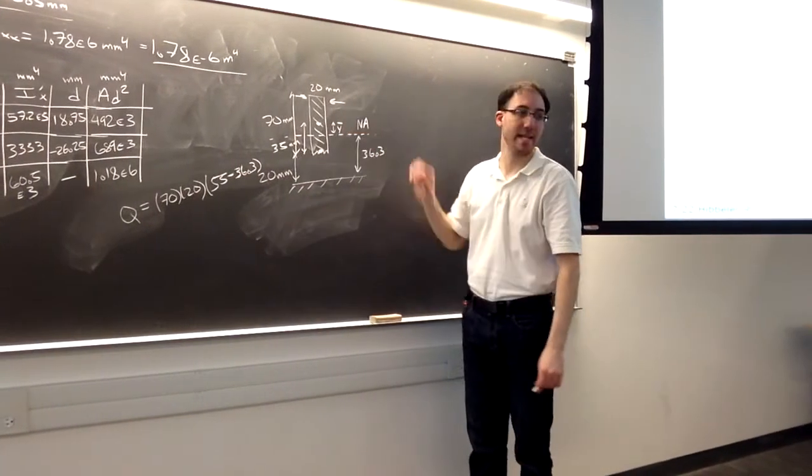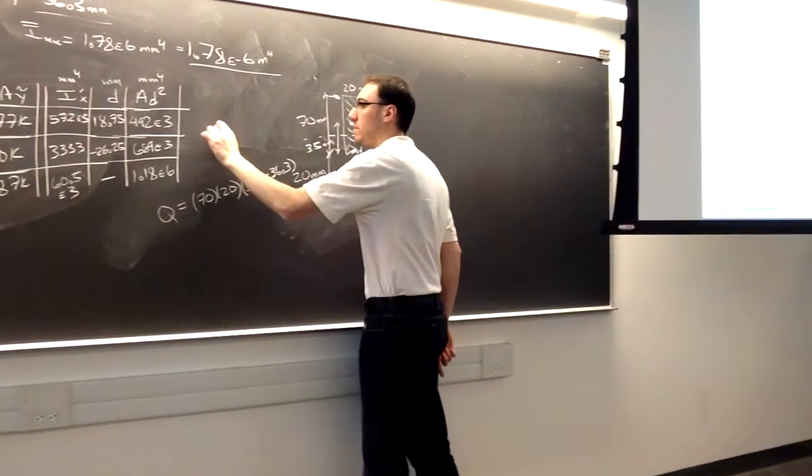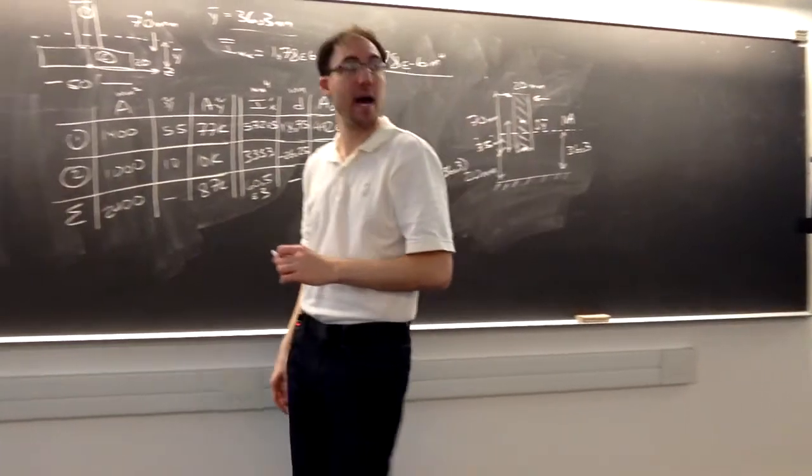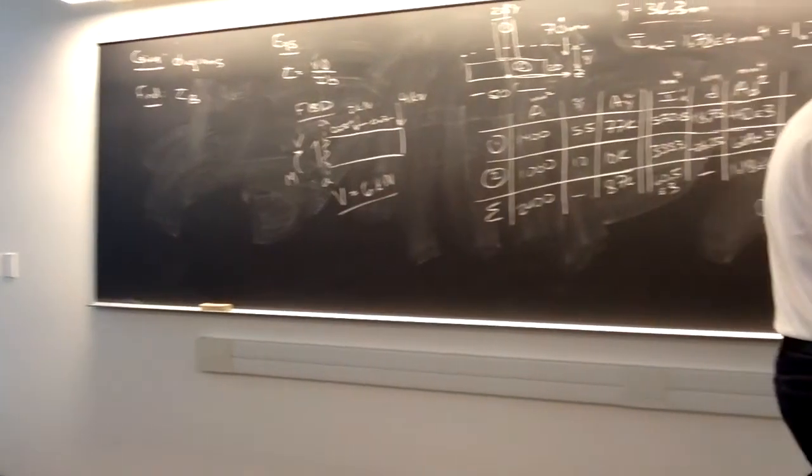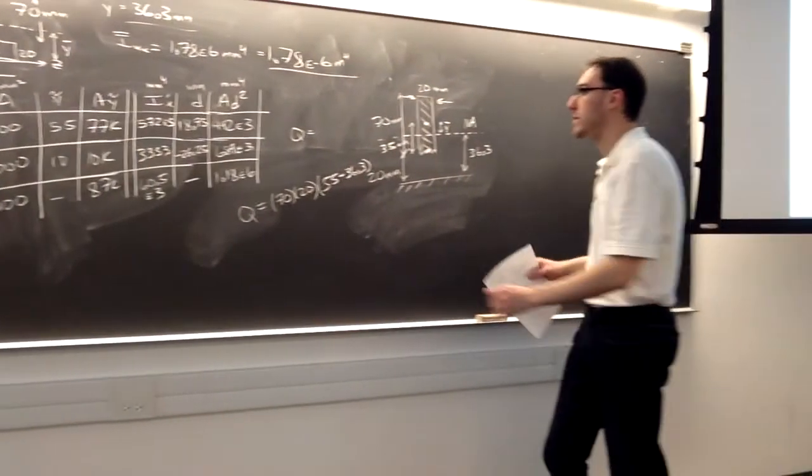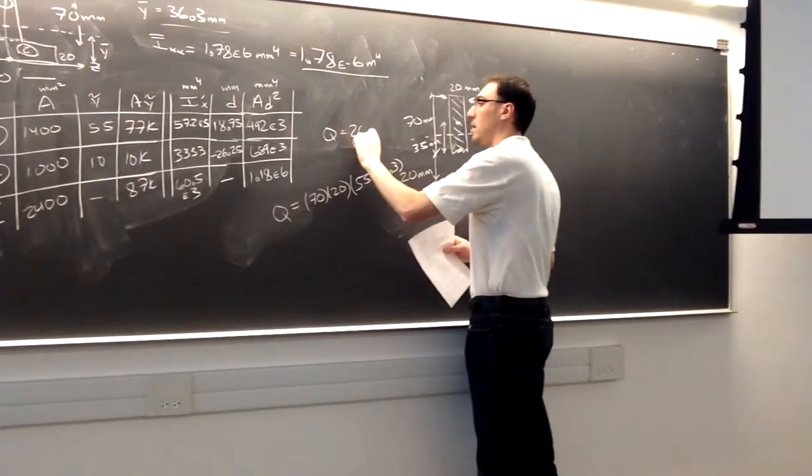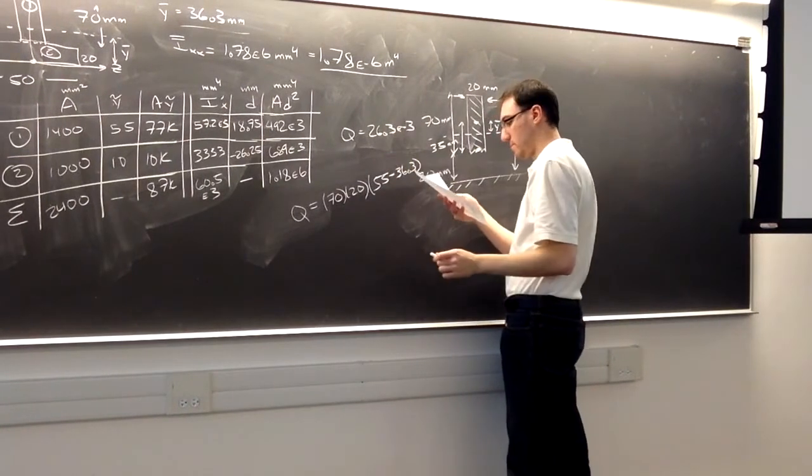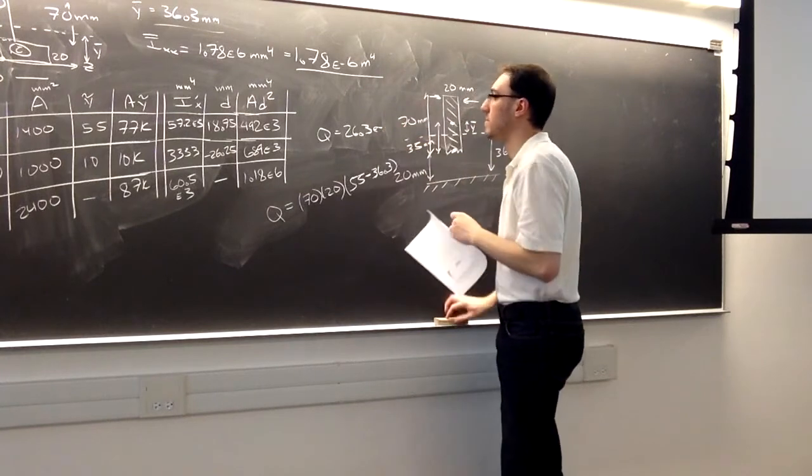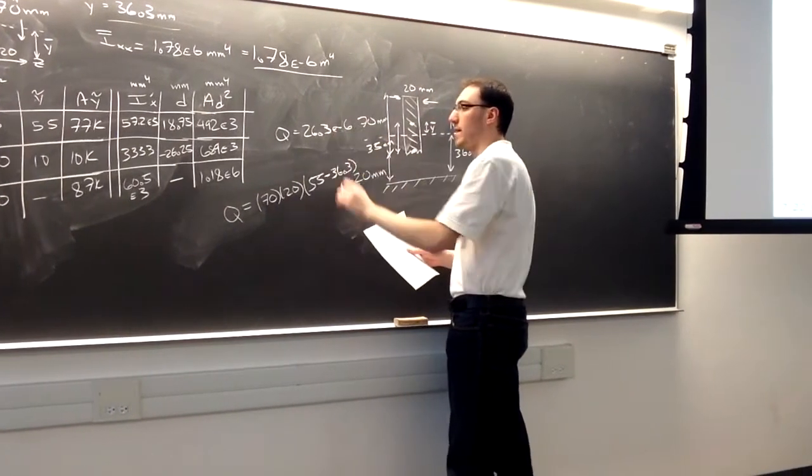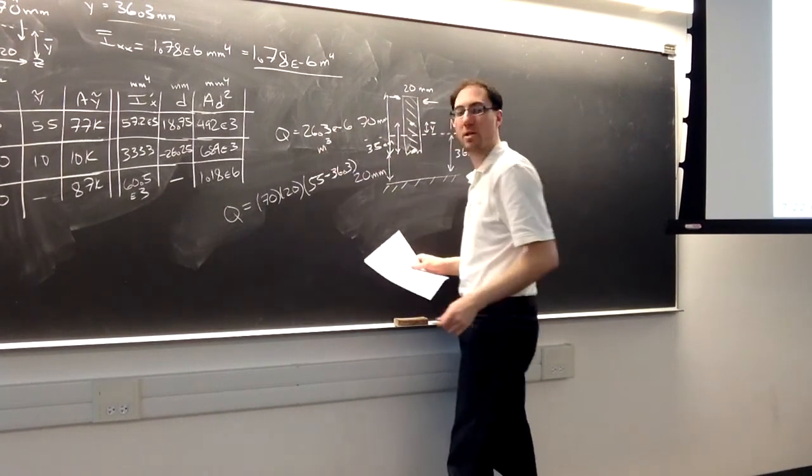And that's our Y bar. Again, this distance in here. So calculating that all out, we get our value of Q here. 26.3 times 10 to the negative sixth. 26.3 times 10 to the negative sixth meters cubed.